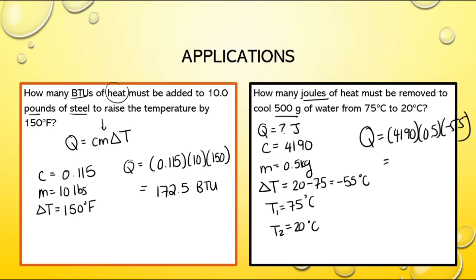Negative optional, but it just indicates that you're cooling. And that's going to give me a big number: negative 115,225 joules. Remembering those joules always produce ridiculous numbers.